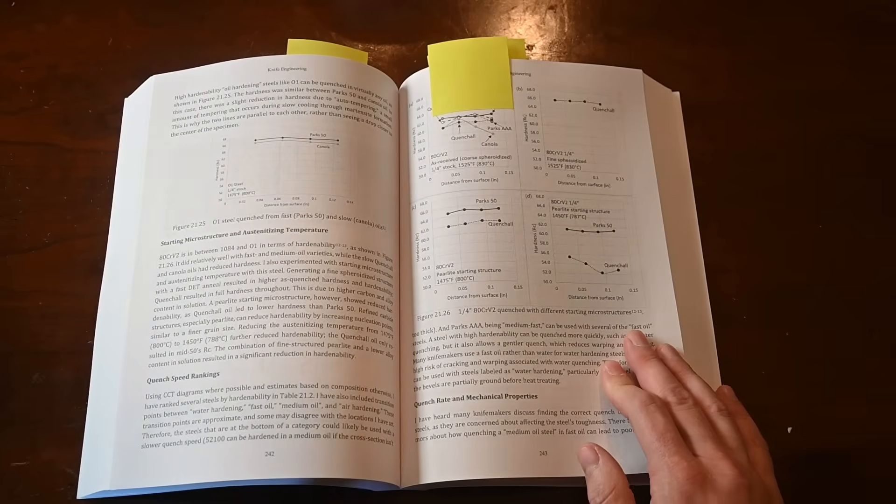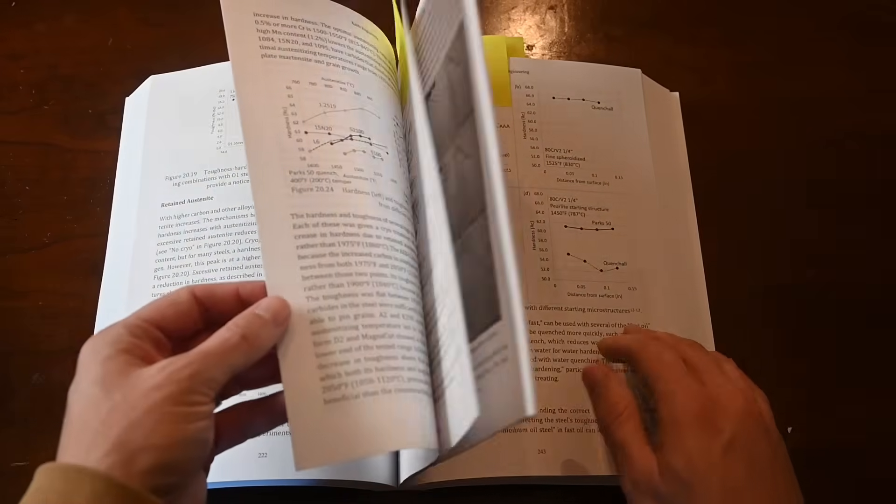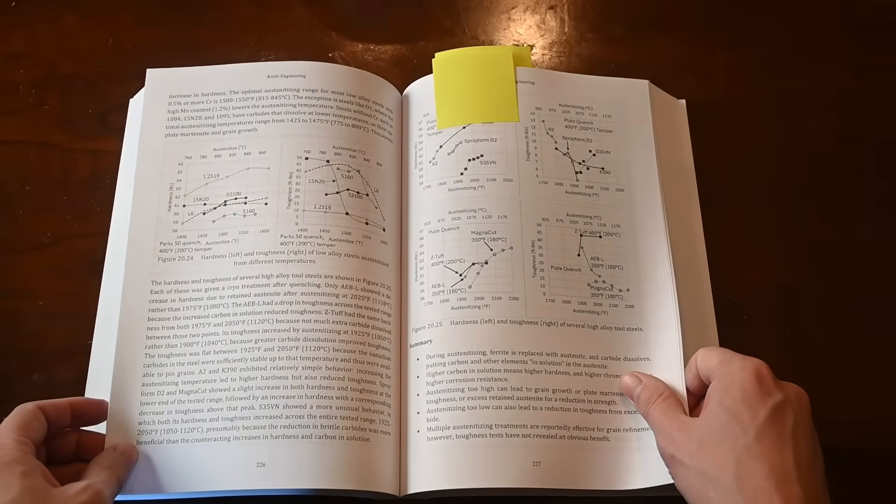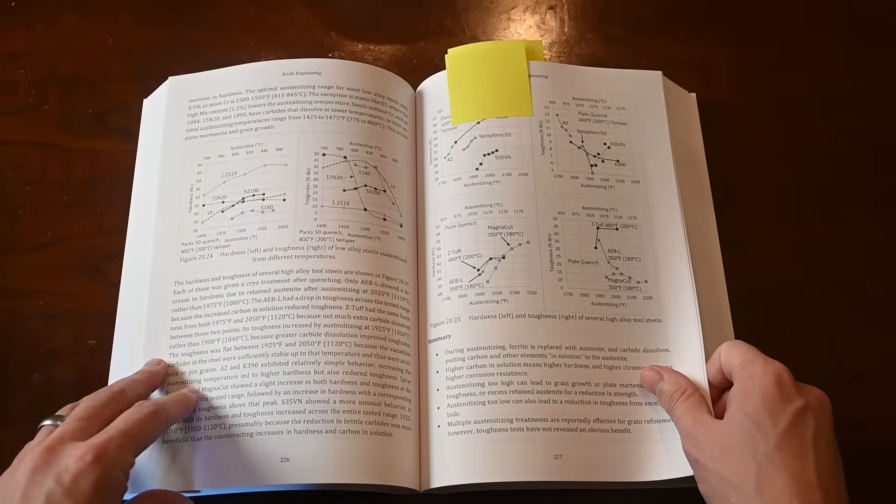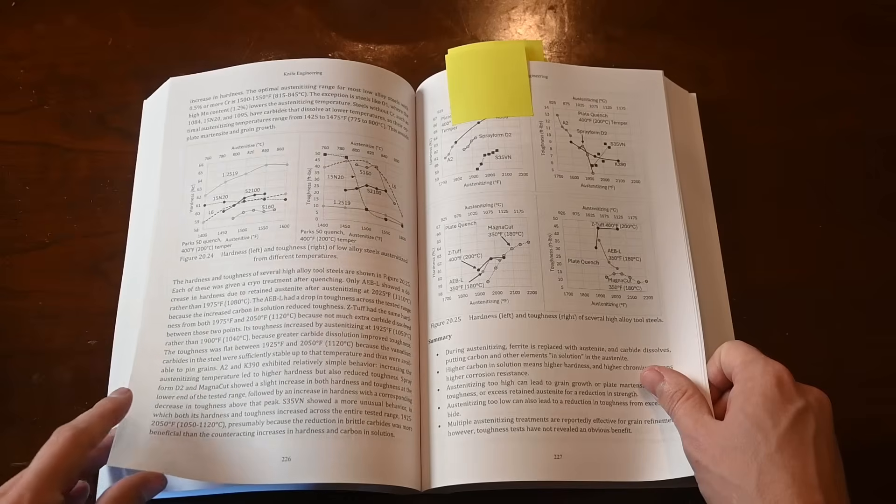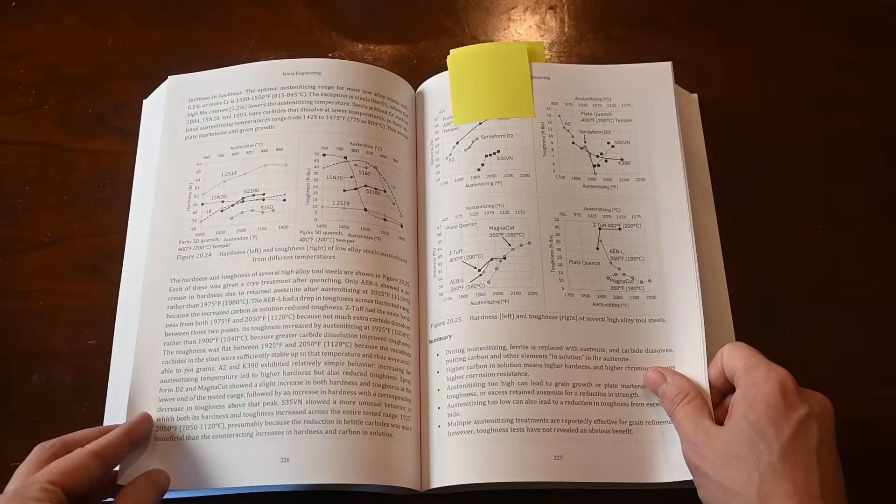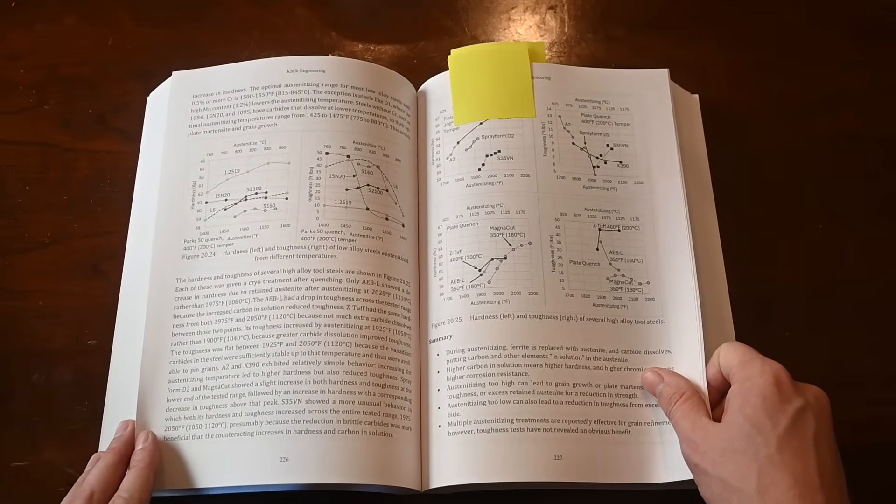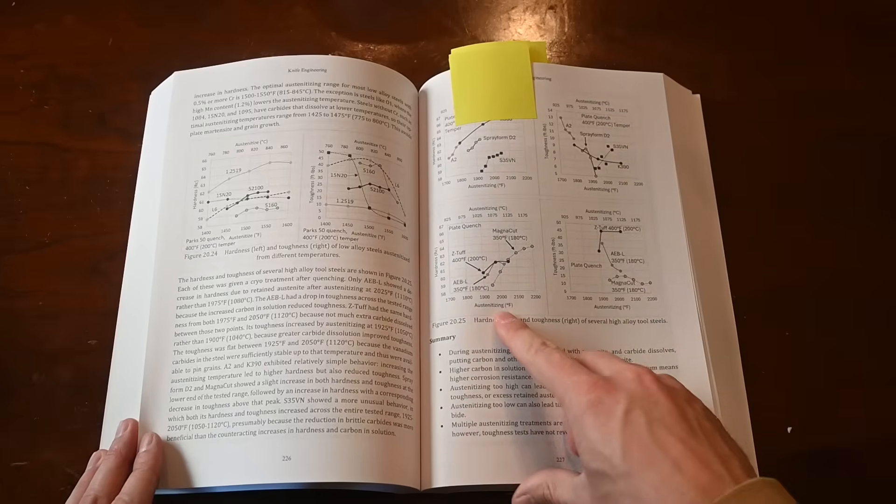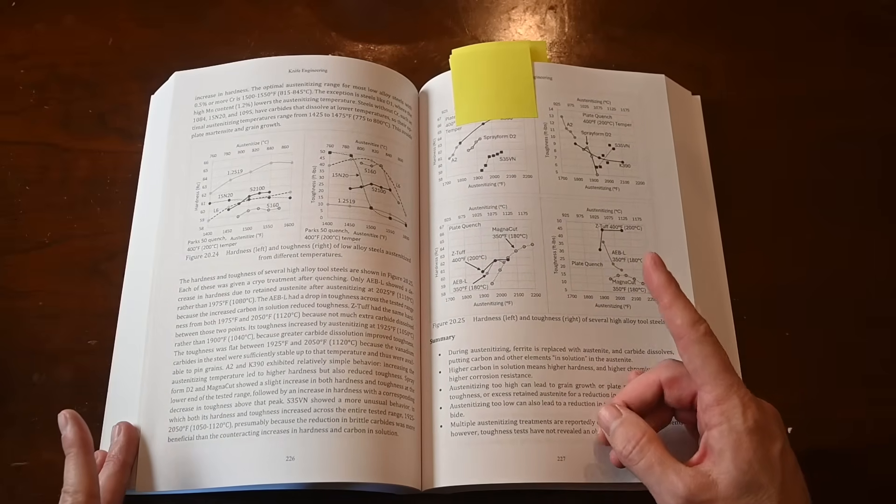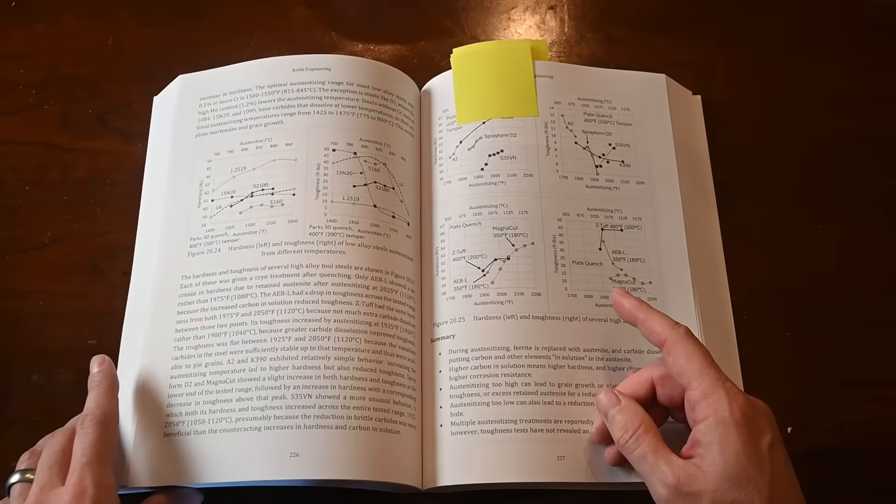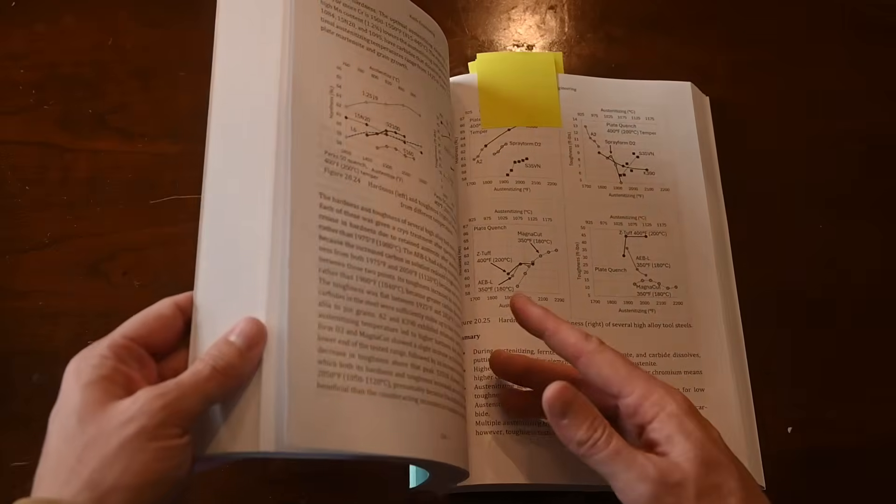I did a bunch of experiments on oils that are all included. Or like here, for example, in the austenitizing section, I included a bunch of data that we've generated over the past few years from different steels. Also, another complaint about the first edition is a lot of figures either had Fahrenheit or Celsius, but now virtually all of the diagrams have both temperature scales on them, so you European readers can stop complaining about that.